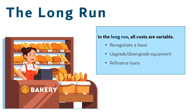The long run is a bit ambiguous, but it's basically a length of time where those big fixed cost decisions can be altered. In the long run, all costs are variable and you can renegotiate leases, upgrade or downgrade equipment, and refinance or pay off loans in order to scale up or scale down your business to make new quantities profitable.